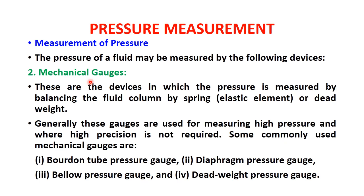Mechanical gauges are devices in which pressure is measured by balancing the fluid column by a spring or dead weight. The output is obtained directly as a pointer pointing on a scale, giving the value of pressure. The fluid column is balanced with the help of a spring or dead weights. These gauges are generally used for measuring high pressure where high precision is not required.